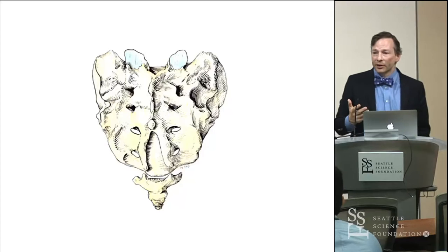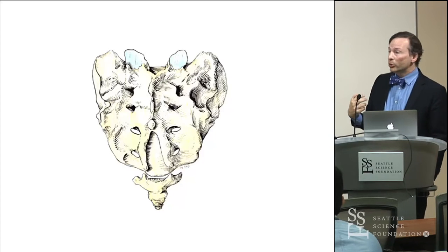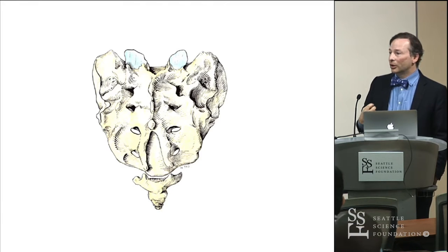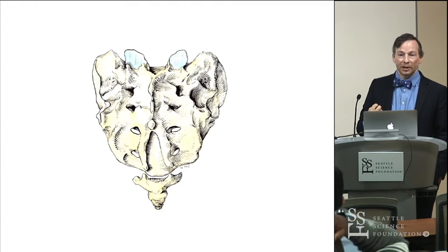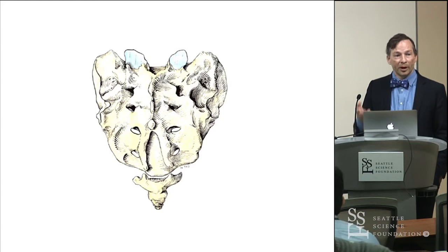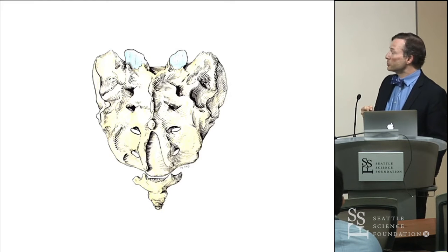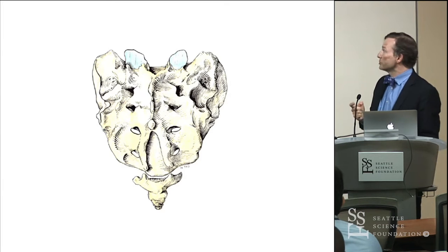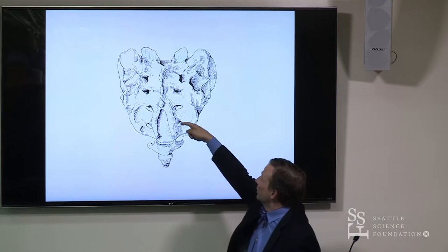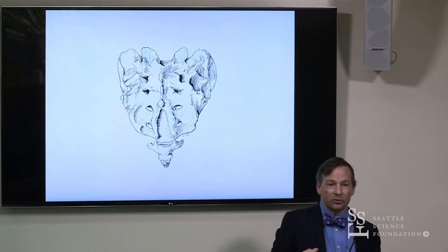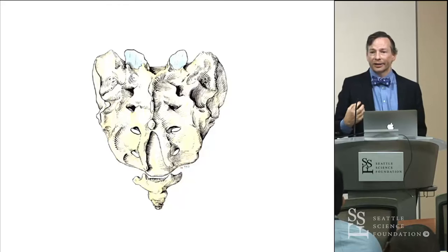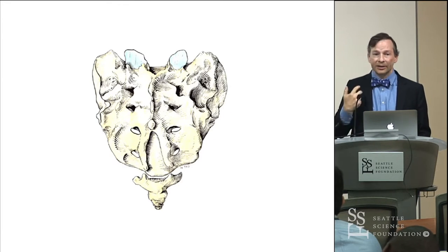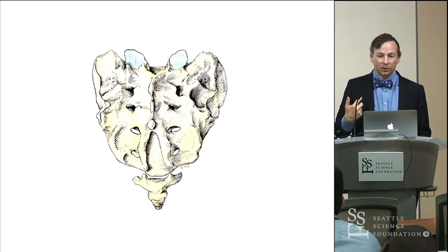The foramina we're looking at posteriorly are the posterior sacral foramina. These are carrying out only part of what would be included in our intervertebral foramina at a more superior level — so posterior rami. The nerves that come out of these posterior rami only go to those deep back muscles around the spine, the paraspinal muscles. They go to the facet joint, and then end in the skin over the back.